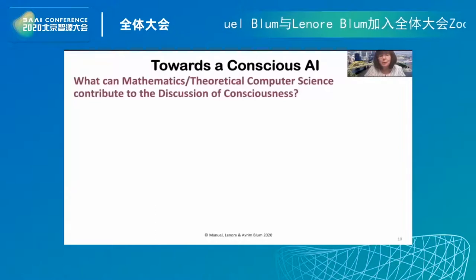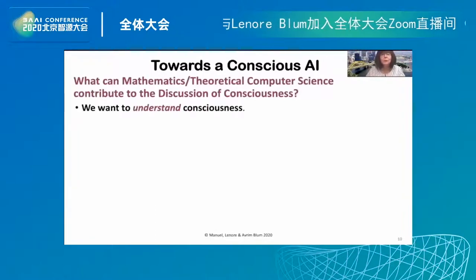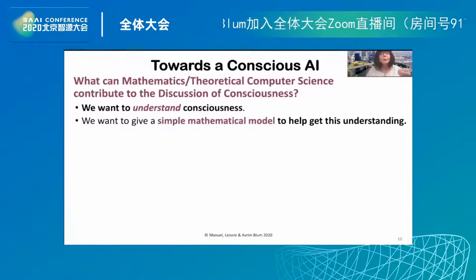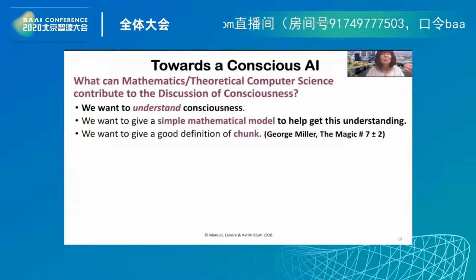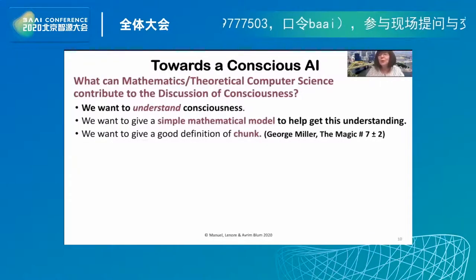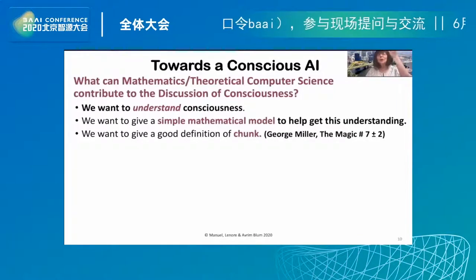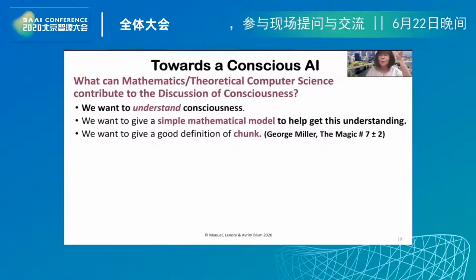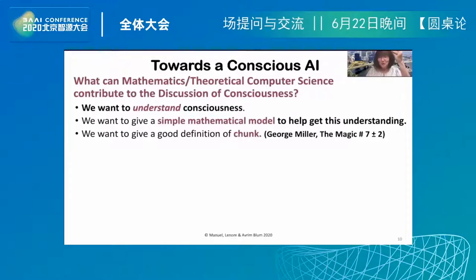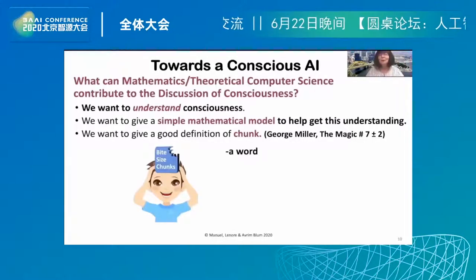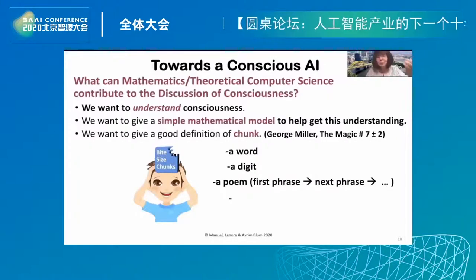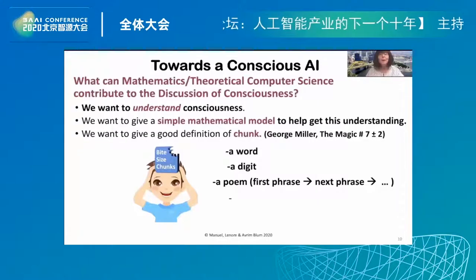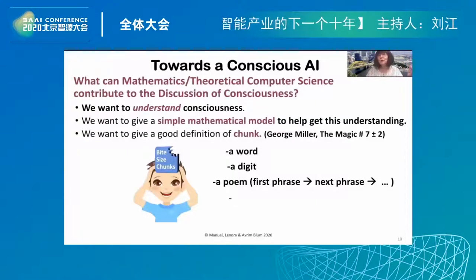What can a mathematician or theoretical computer scientist contribute to the discussion of consciousness? We want to understand consciousness and give a simple mathematical model to help. We aim for simplicity. We want to give a good definition of 'chunk.' In 1950, psychologist George Miller talked about the magic number seven plus or minus two — a chunk is just a small bit of information you can keep in short-term memory for a very short time. It could be a word, a digit, or a phrase that points to the next phrase so you can recite a poem. We want to give a formal definition of this informal notion of chunk.